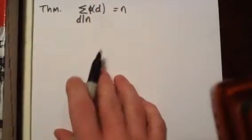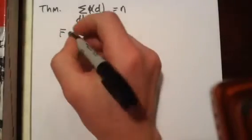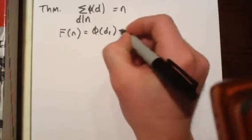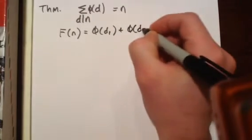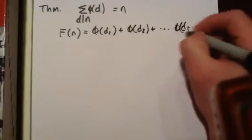So let's make this a little bit more clear what's going on here. We're going to call this summation capital F of n, and it's simply phi of d1 plus phi of d2 plus all the way up to phi of dr.